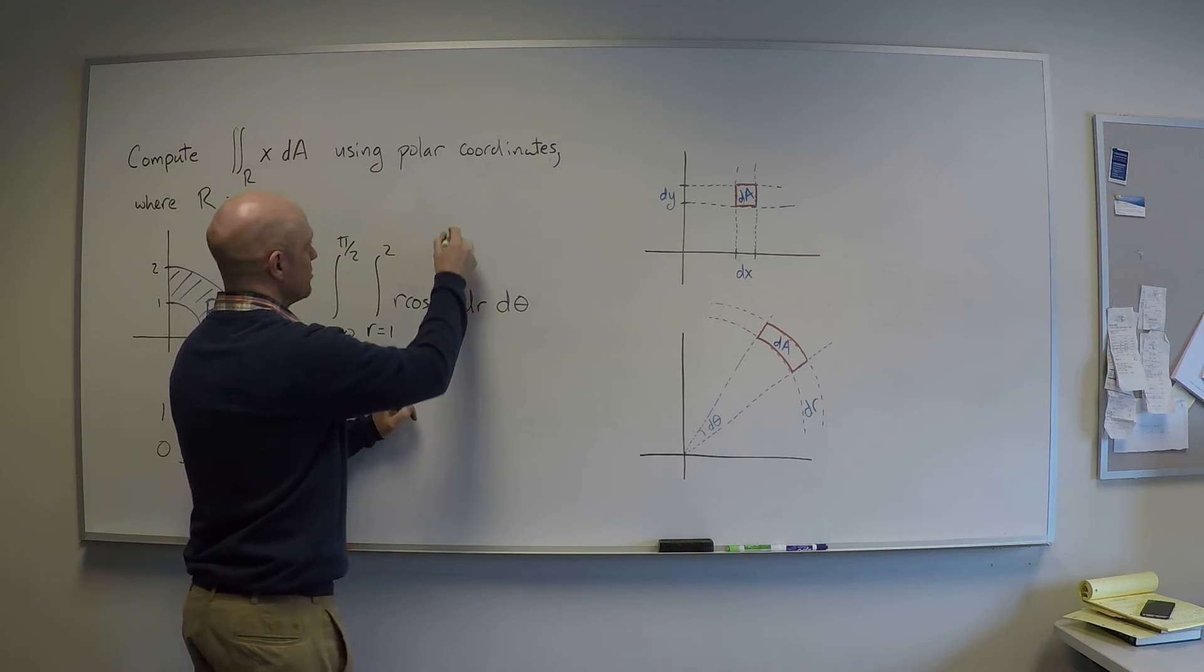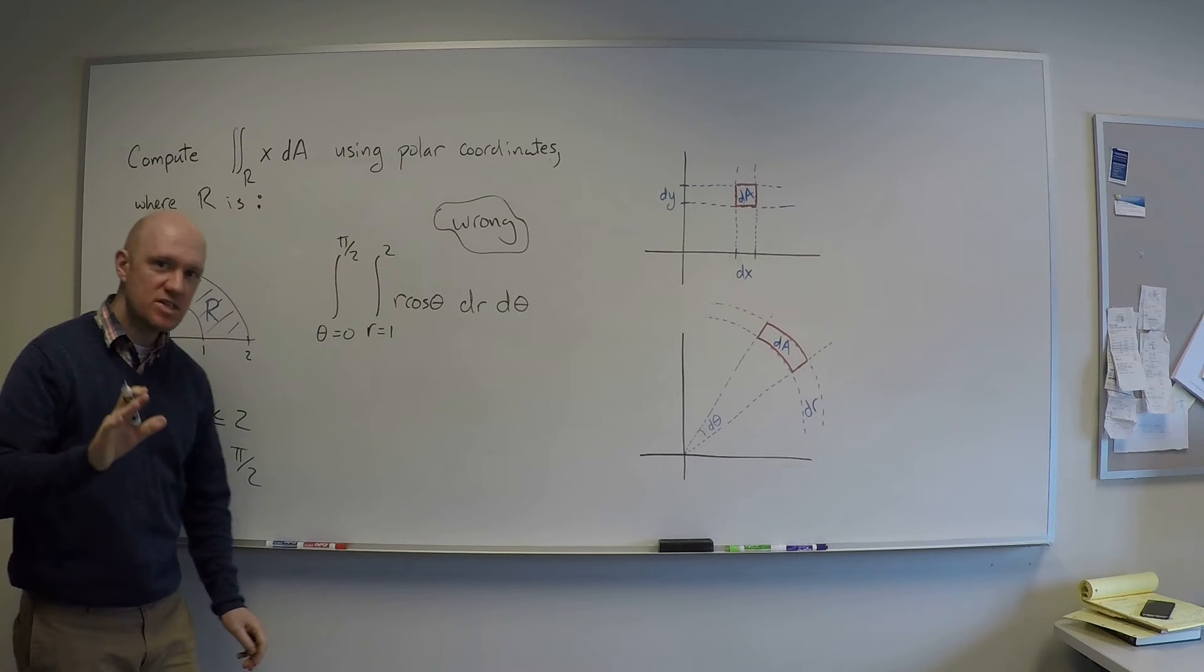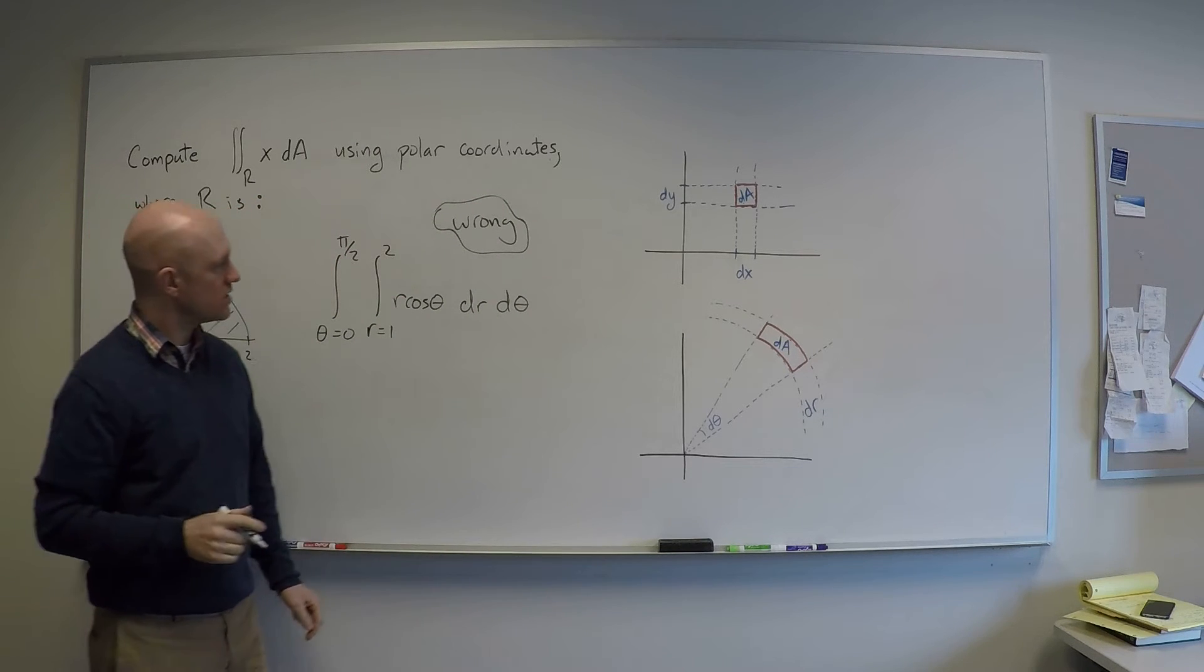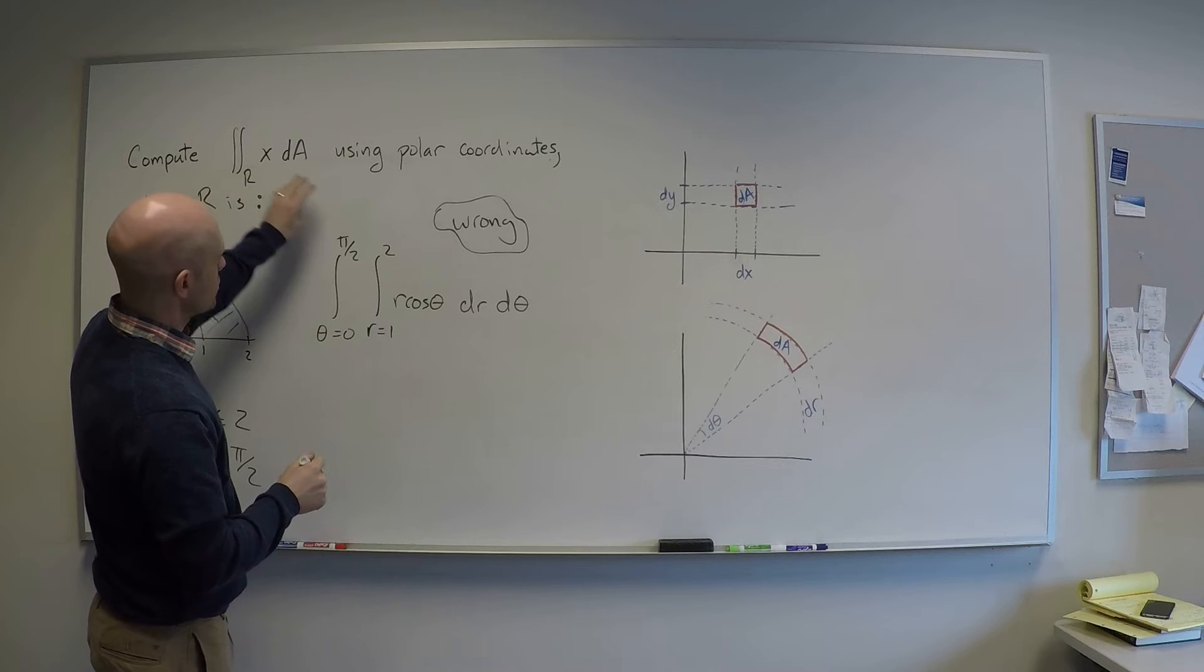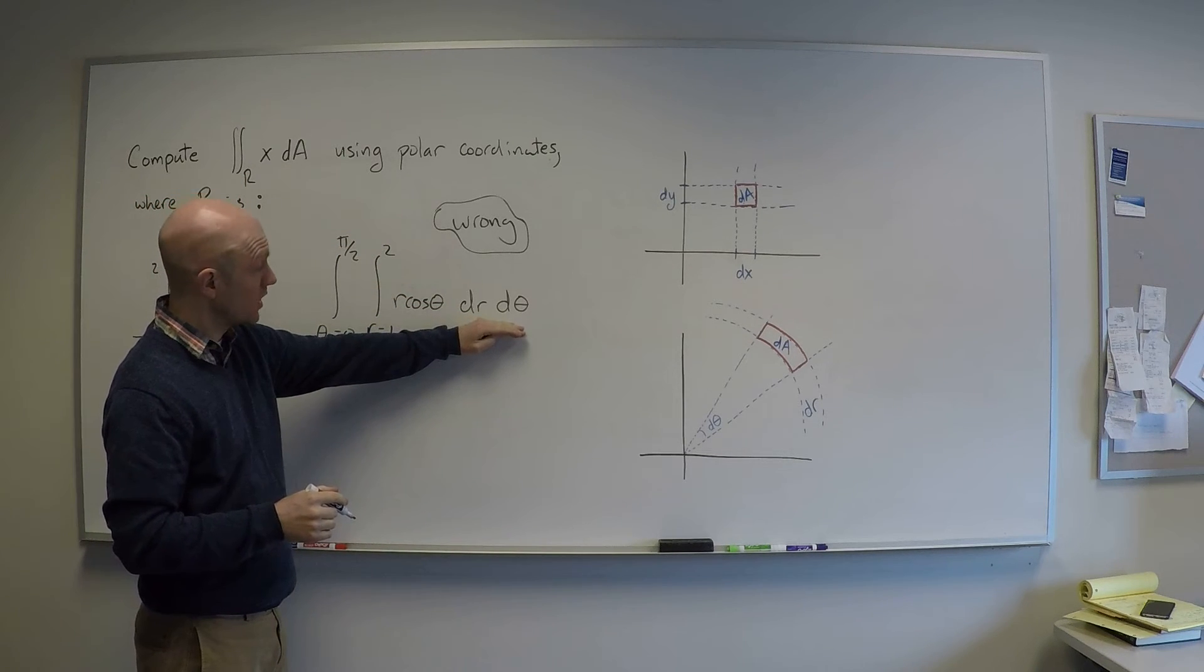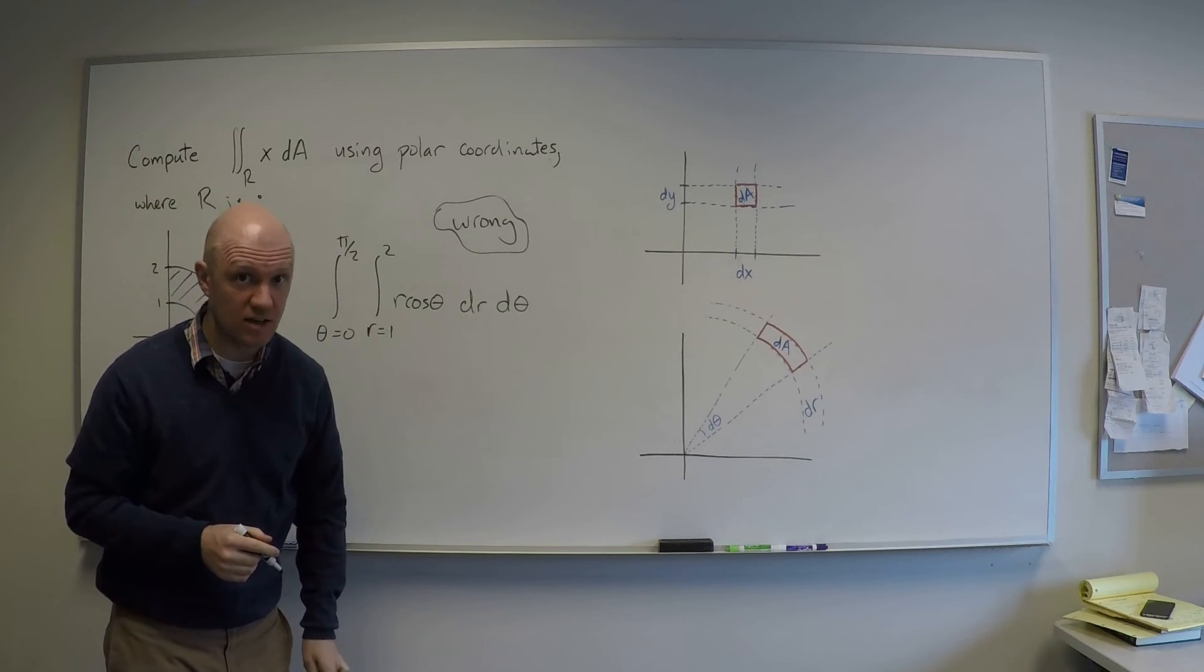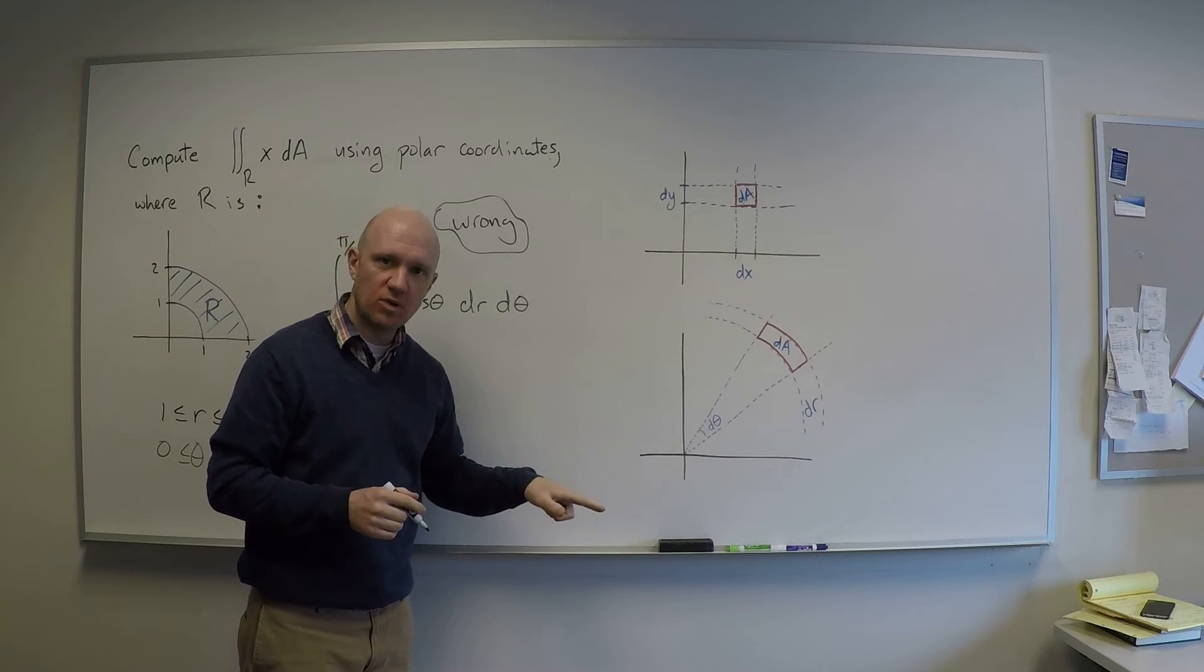Okay? And the reason is subtle. So let me say wrong. Wrong. The reason is subtle. Here's what it is. When I went from this integral to the actual integral that I can evaluate in terms of the coordinates I'm using, I just sort of willy-nilly took dA and called it dr d theta. But dA is different in polar coordinates.